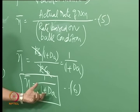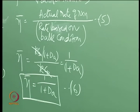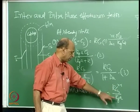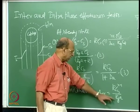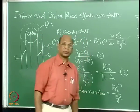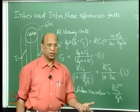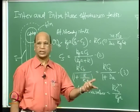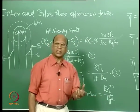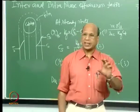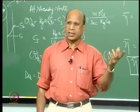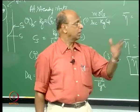Now if I know the Damköhler number — for first order this simplifies to K / (K_G · A) — where K_G is obtained from mass transfer correlations and K is the intrinsic rate constant. Please remember that K here is the intrinsic rate constant — meaning without any mass transfer effect, as we imagined in our Langmuir-Hinshelwood kinetics. One is to find out whether we have a very good catalyst or not.